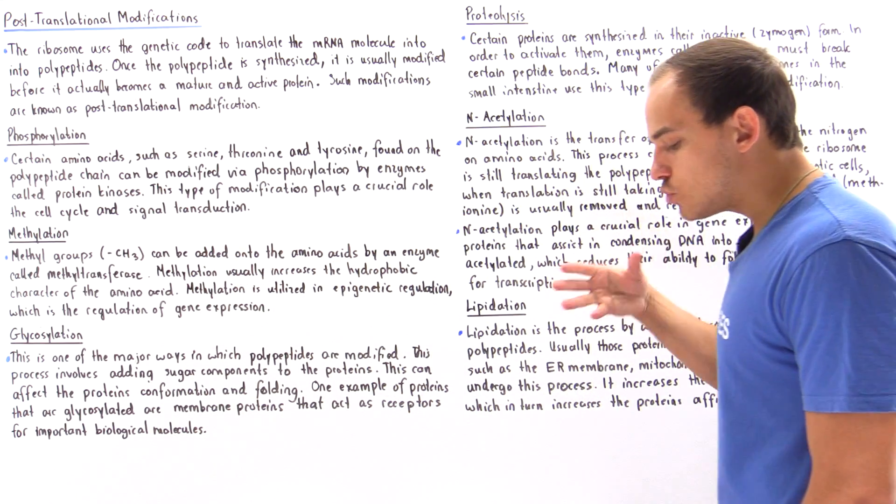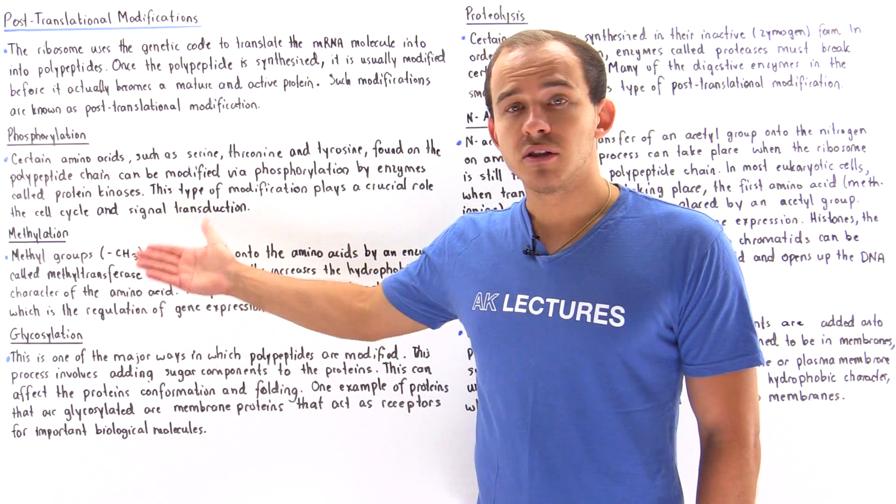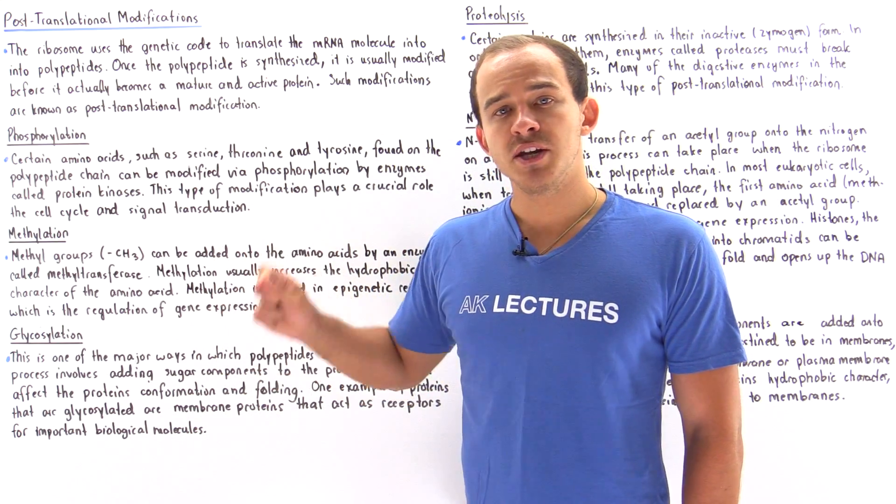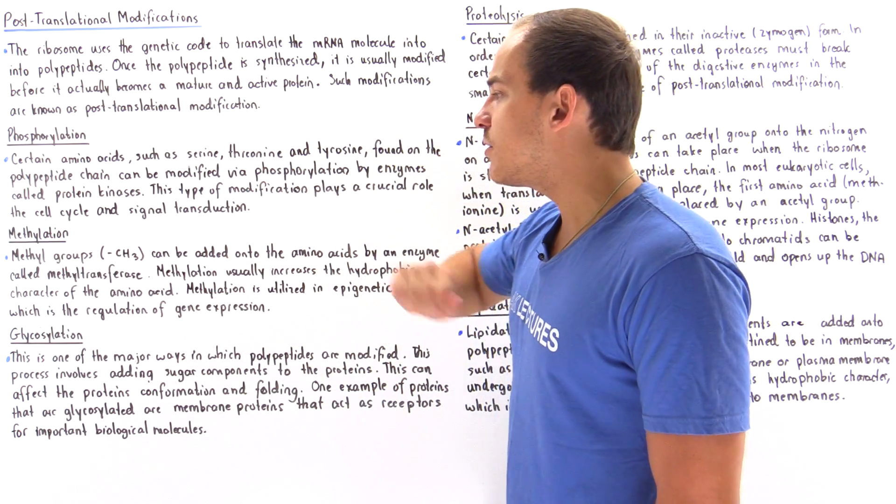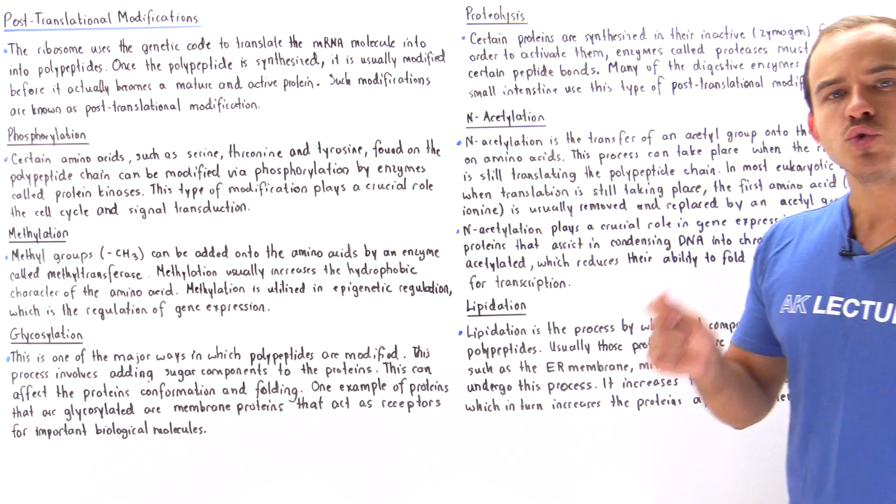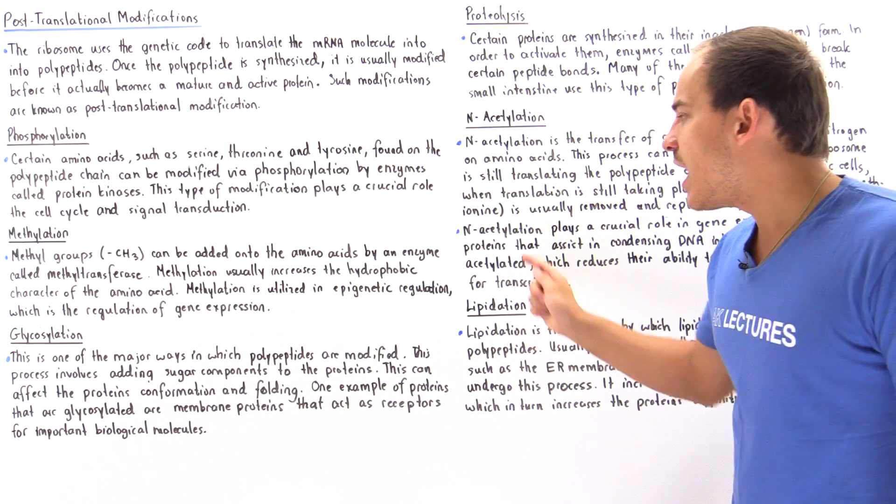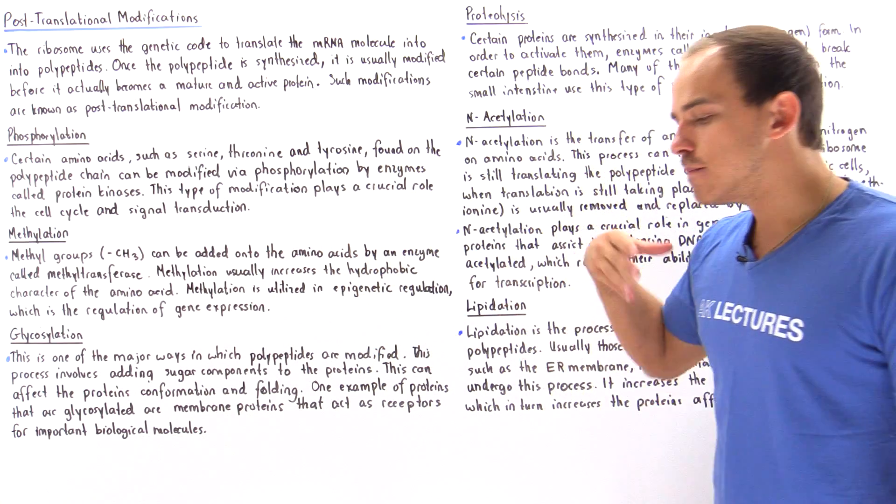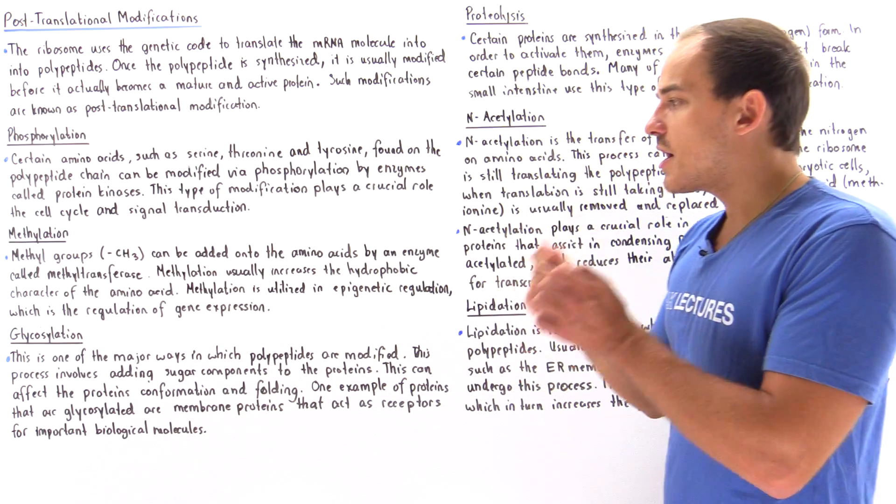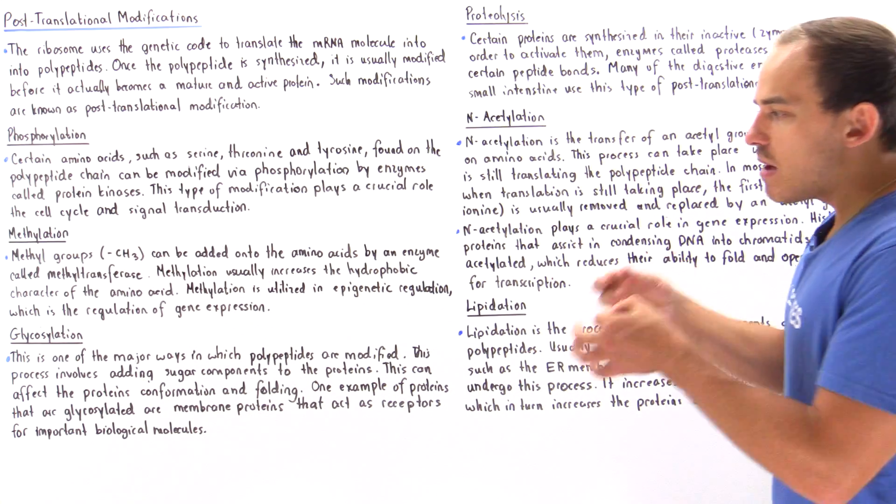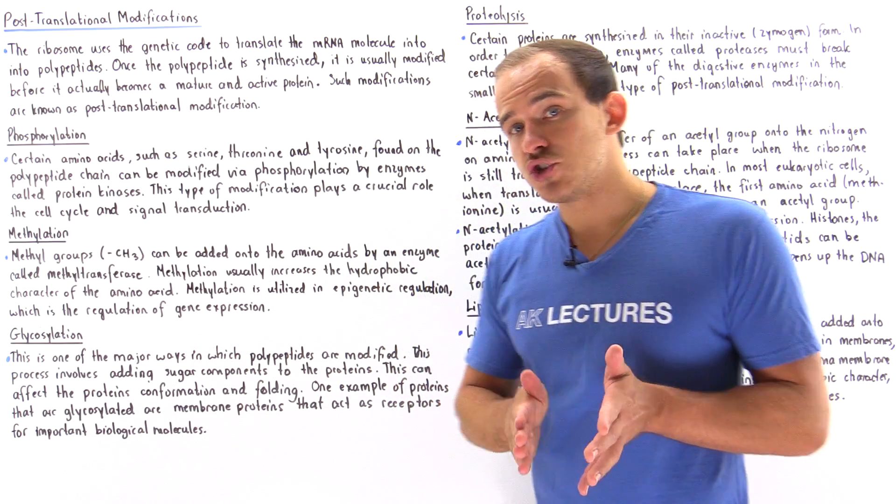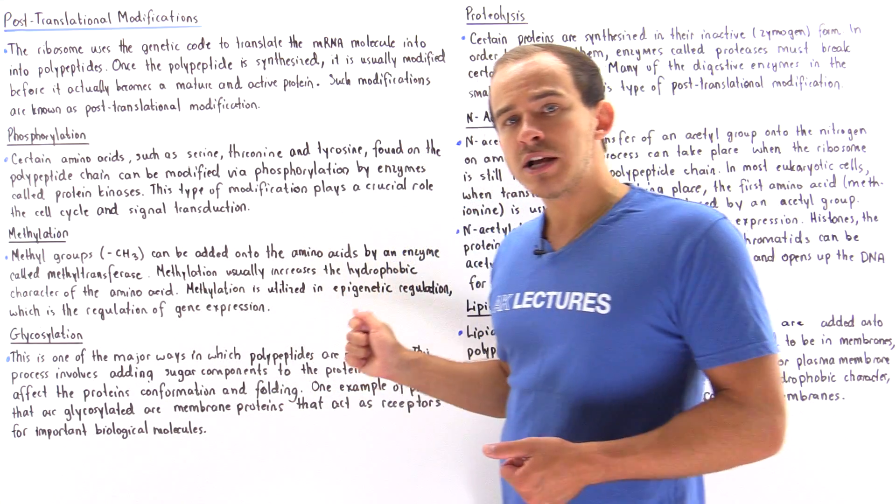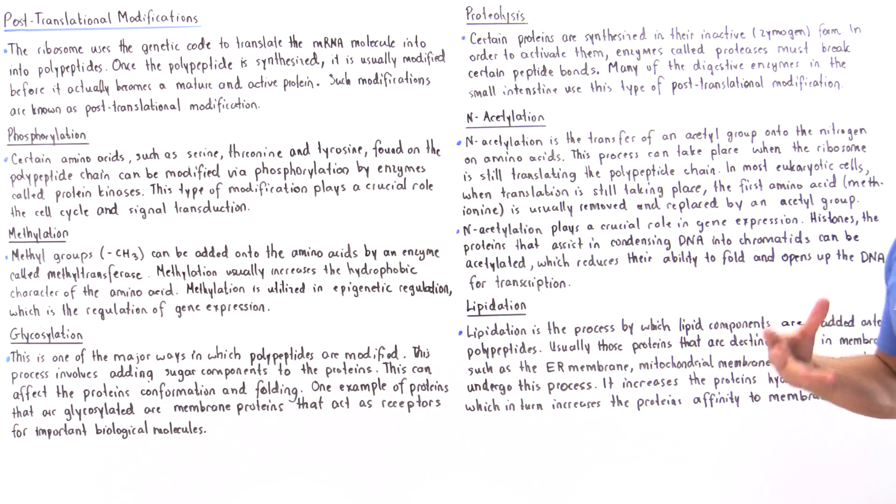The second type of post-translational modification is methylation. Methylation is the addition of a methyl group onto certain amino acids via the enzyme known as methyltransferase. Methylation usually increases the hydrophobic character of the enzyme, so polypeptides that are methylated increase their hydrophobic character. Methylation is utilized in a process known as epigenetic regulation, which is the regulation of gene expression that takes place during transcription.